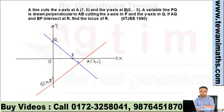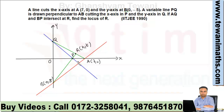If AQ and BP intersect at R, we are drawing lines AQ and BP. These two lines are intersecting at point R(h, k), and we have to find the locus of this point R.